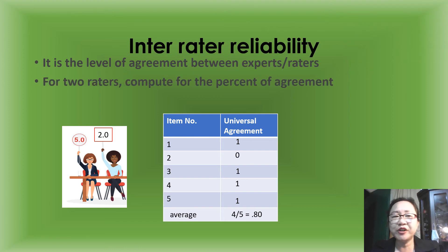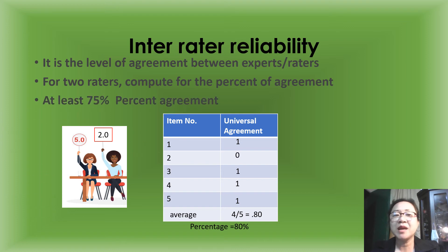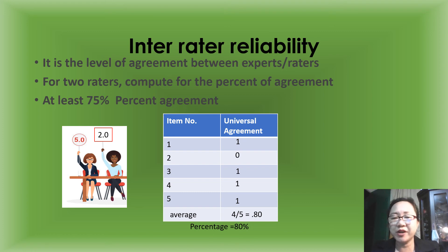For two raters, we compute for the percent agreement. In our example, the percentage is 80%, and our cut-off value is at least 75% agreement. So obtaining 80% means our questionnaire is 80% reliable.